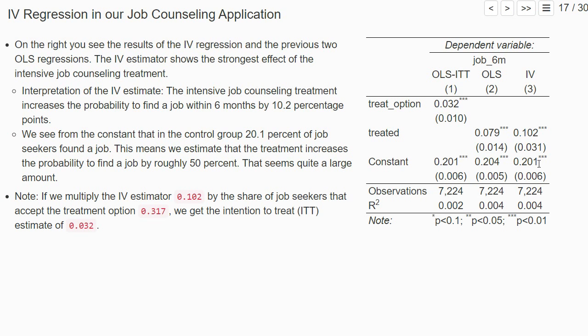From the constant in this regression, we see that in the control group only 20.1% of job seekers found a job. Increasing this by 10.2 percentage points means an increase of roughly 50%, so intensive job counseling increases the probability to find a job by roughly 50%.